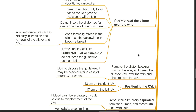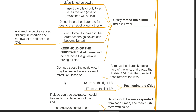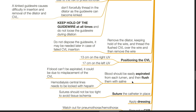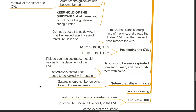Positioning of the CVL should be at 13 cm on the right IJV and 17 cm on the left IJV, confirmed with a chest X-ray after insertion. Blood should be easily aspirated from each lumen; if not, it could indicate misplacement. Hemodialysis central lines need to be locked with pure heparin. Suture the catheter in place — the suture should not be too tight to avoid tissue ischemia. Apply a sterile dressing and request a chest X-ray.